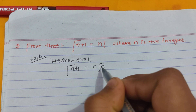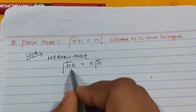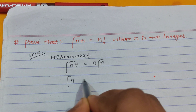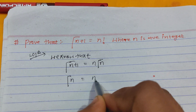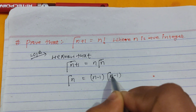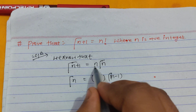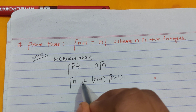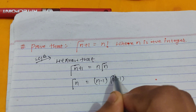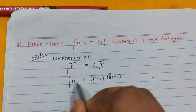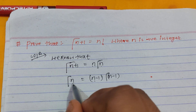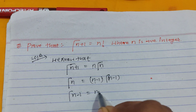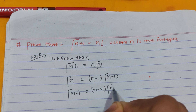We can write Gamma(n) equals (n-1) Gamma(n-1), so Gamma(n+1) equals n·Gamma(n), and Gamma(n-1) equals (n-2)·Gamma(n-2).